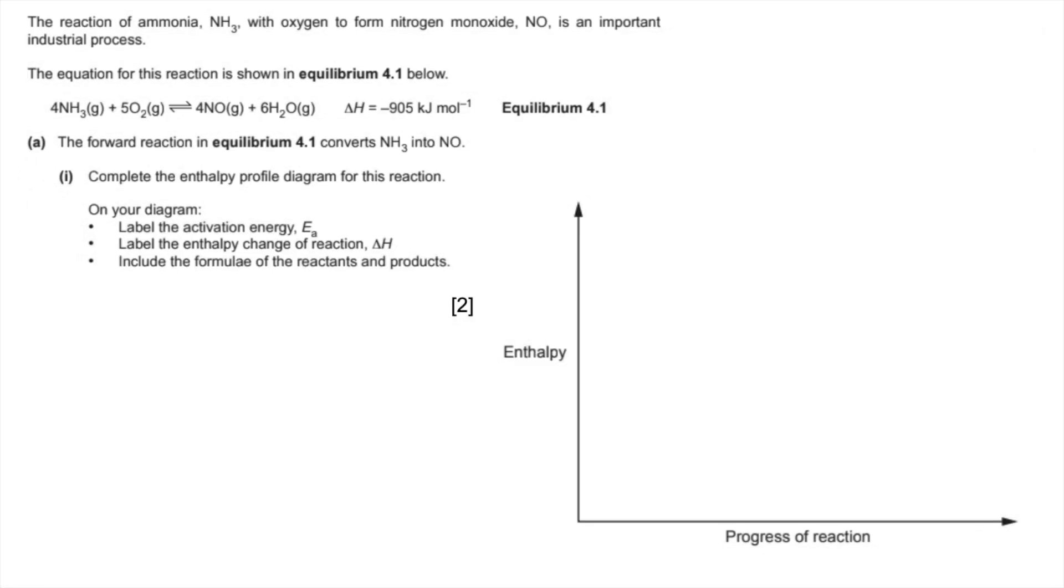In part A we've got to complete the energy profile diagram for the reaction where we have to label the activation energy EA, the enthalpy change of reaction as delta H, and put the formulas of the reactants and products onto the relevant part of the diagram. The most important bit of information is the enthalpy change for the reaction is negative, so it's an exothermic reaction.